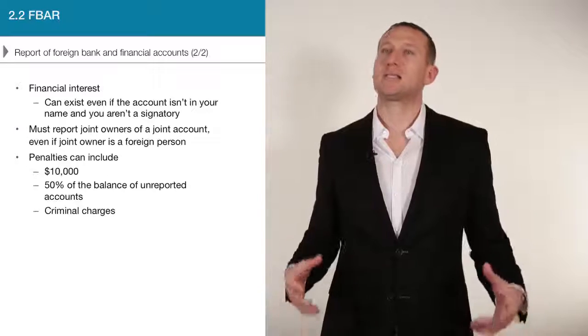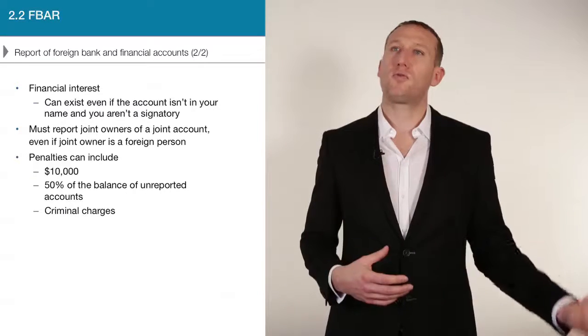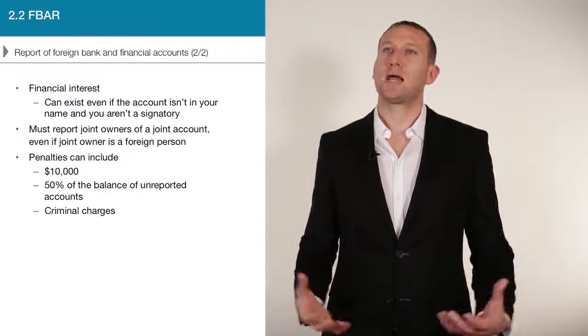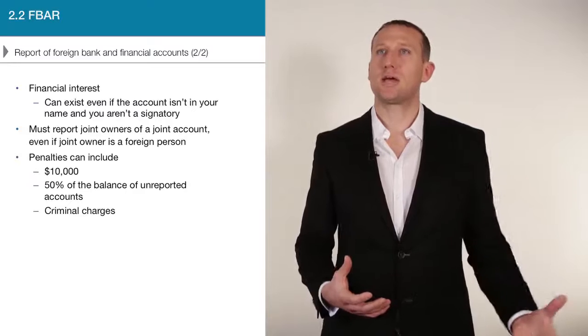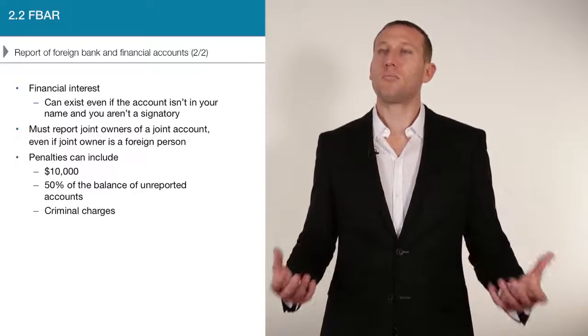The next thing we have to look at is when does it become reportable? It becomes reportable if the aggregate of all of your foreign financial accounts exceeds $10,000. Now it's not $10,000 per account — it's an aggregate balance of $10,000. Which means if you have one foreign account with $5,000 in it and one account with $6,000 in it, the combined value is $11,000, which exceeds $10,000, and you would have to report both accounts.